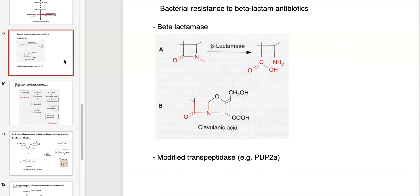Bacterial resistance to beta-lactam type antibiotics typically occurs in a few different ways. One is that microbes outright produce beta-lactamase enzymes — an enzyme that breaks open the beta-lactam ring in these antibiotics. You can see that opened-up ring here, and as a result, the beta-lactamase makes the penicillin-type drug inactive so it can no longer bind to the transpeptidase.